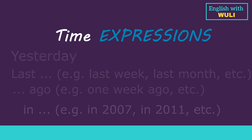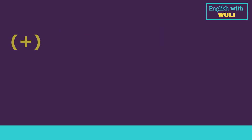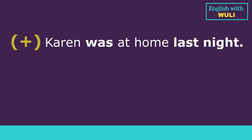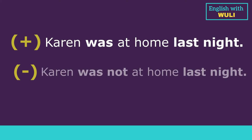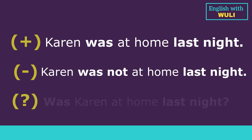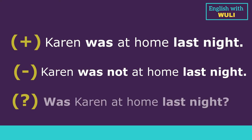When you want to say something happening in the past, you use positive form. When you want to say something that did not happen in the past, you use negative form. When you want to ask questions about something happening in the past, you use affirmative or interrogative form.